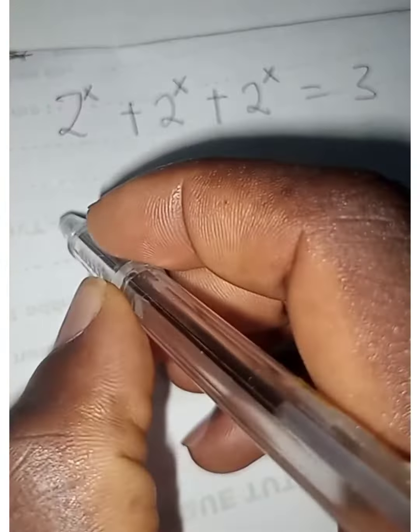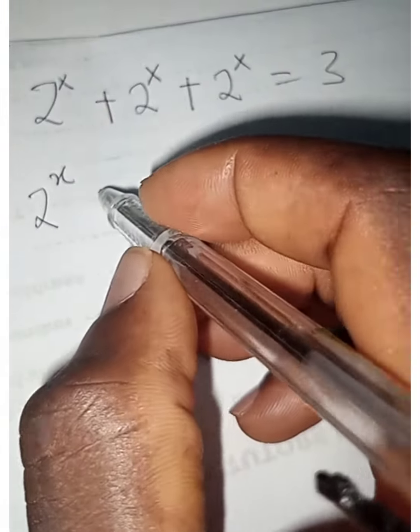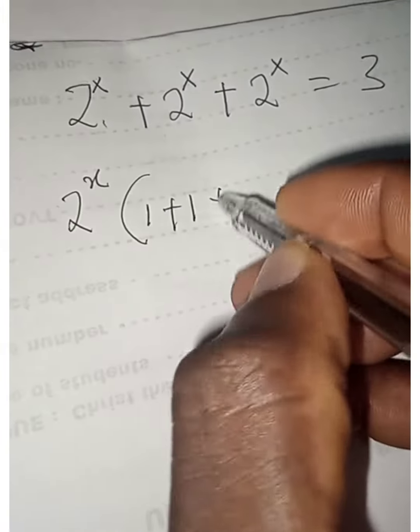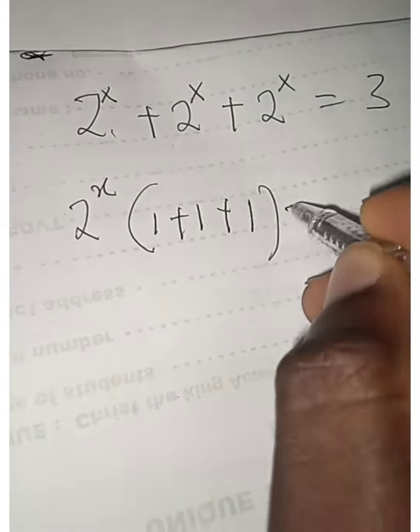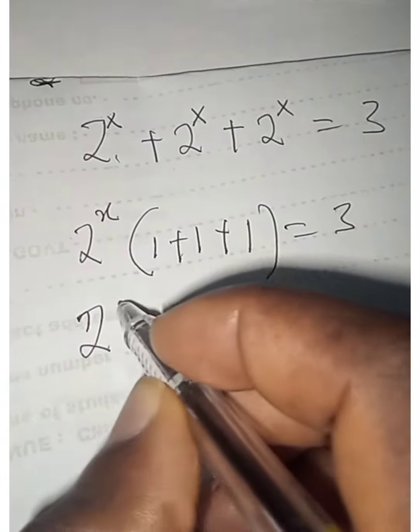So what we're going to do is we're going to have 2 raised to power x into 1 of it plus 1 of it plus 1 of it, which equals to 3.